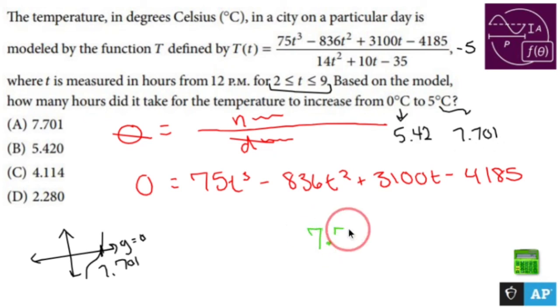Well, let's subtract 7.701 minus 5.42 is going to be, I don't know why I put T, but 2.281, which is awfully close to that. So maybe there's a little bit of rounding error in the math that I did.